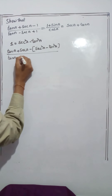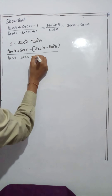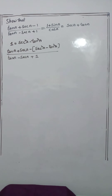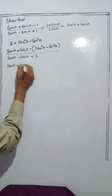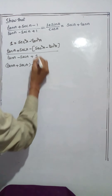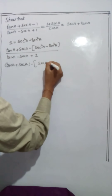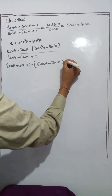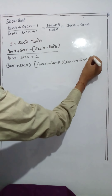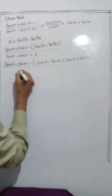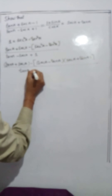The expression becomes (tan a + sec a - 1)(sec²a - tan²a) in the numerator, divided by (tan a - sec a + 1). The bracketed term is in the form a² - b², which equals (a - b)(a + b). So sec²a - tan²a = (sec a - tan a)(sec a + tan a).